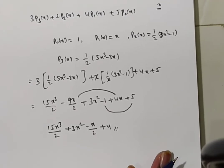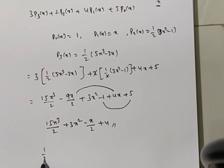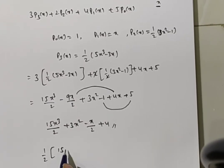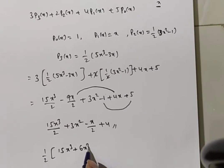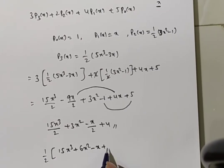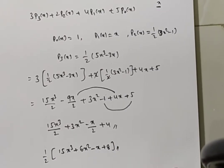Of course you can simplify. LCM is 2. Then ½ times, you can add, this is 15x³ + 6x² - x + 8.